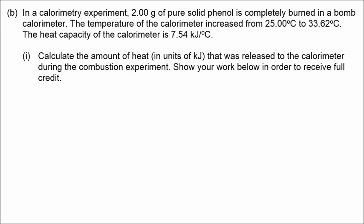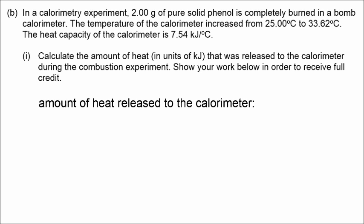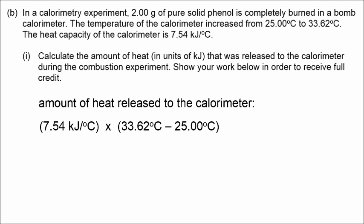In part B, 2 grams of pure solid phenol is burned completely, and the calorimeter temperature went from 25.00 to 33.62 degrees Celsius. The heat capacity of the calorimeter is 7.54 kilojoules per degree Celsius. The heat released equals 7.54 times the delta T of 8.62 degrees Celsius, giving — rounded to three significant figures — 65.0 kilojoules. Note there are no grams involved because the heat capacity has units of kilojoules per degree Celsius only.